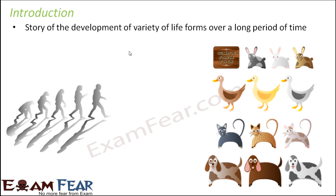It sounds surprising — how can a tiny bacteria and a huge elephant share a common ancestor? But yes, that is true. It is the story of development of variety of life forms over a long period of time. When so many things came from one common ancestor, it obviously means it took a really, really long time — in terms of billions of years. Even human beings have evolved from a very different kind of organism, which is why it is said that apes and human beings all share a common ancestor.